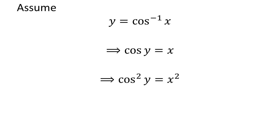Squaring both sides doesn't change the equation, so we get square of cosine of y is equal to square of x. Again, multiplying minus 1 to both sides doesn't change the equation, so minus cosine squared y is equal to minus x squared.